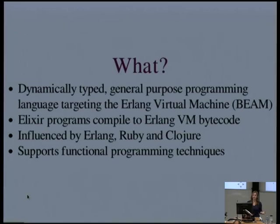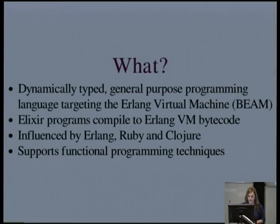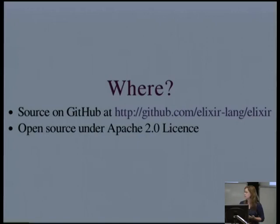Elixir has clearly been influenced by Erlang, both in terms of the virtual machine and the semantics of the language. But there's also a strong influence from Ruby, particularly with regards to the syntax, and also Clojure and its implementation of macros and protocols. In the tradition of both Erlang and Clojure, it has pretty good support for functional programming techniques. You can find the source code on GitHub under an Apache license, with a few early adopters already using it in production.